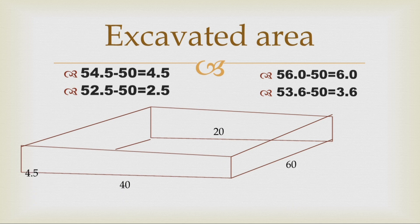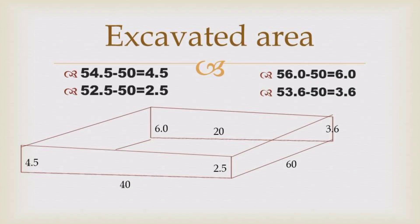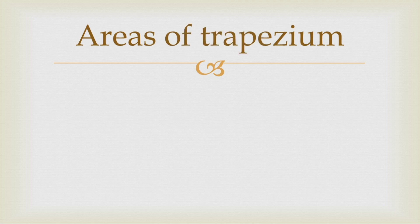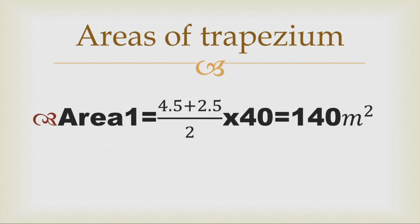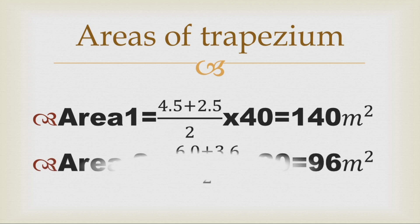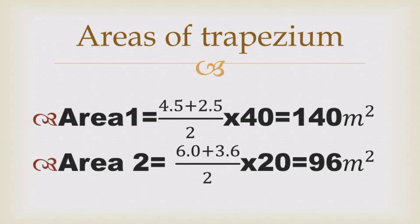As illustrated, FE lies at the 30-meter mark, which is the mean of those two end sections. Now we find the areas using the trapezium formula. For Area 1, we have a height of 40 meters multiplied by the mean of the two distances: the first distance is 4.5 meters and the second is 2.5 meters. Area 1 comes out to 140 square meters.